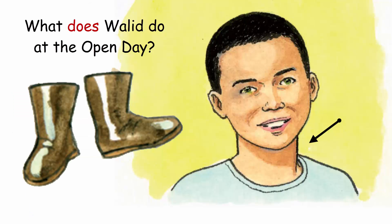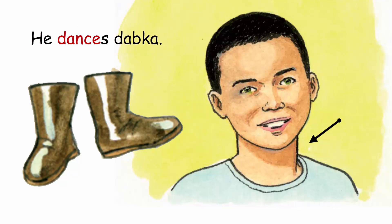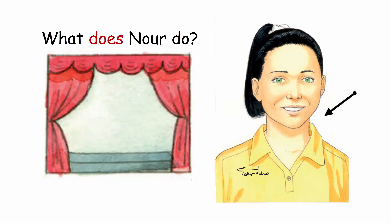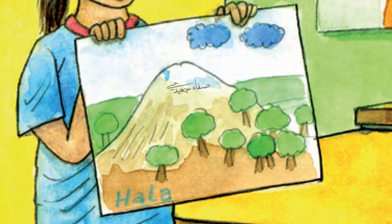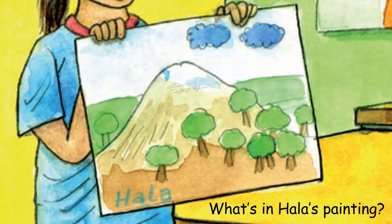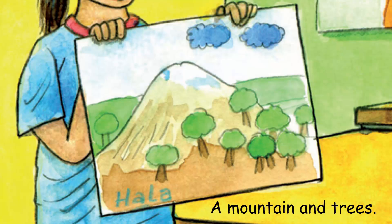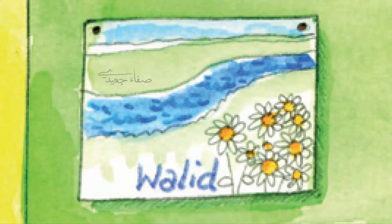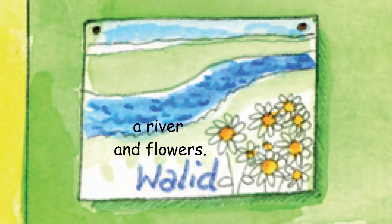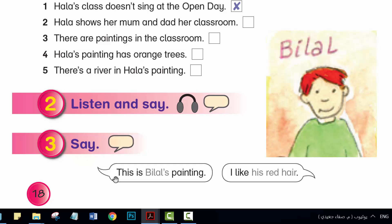What does Walid do at the open day? What does Nur do? What's in Hala's painting? What's in Walid's painting?